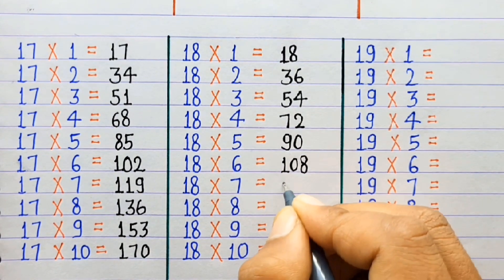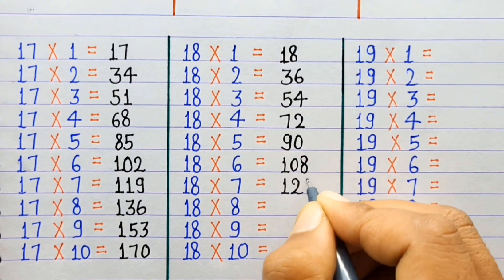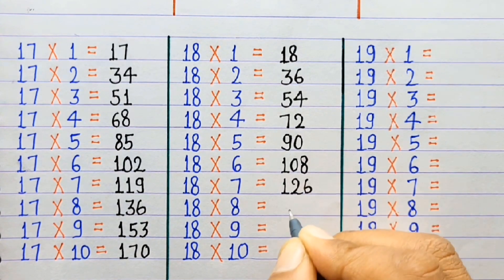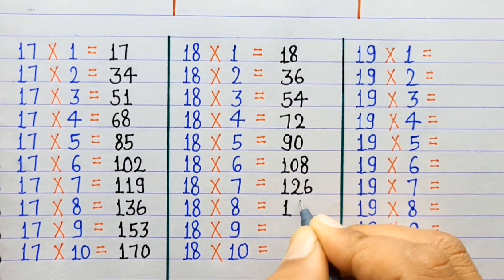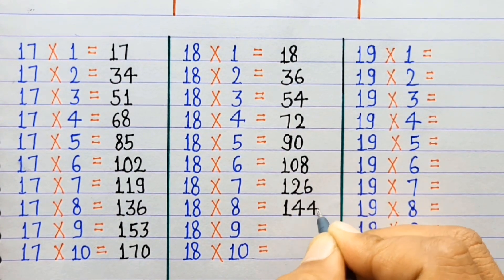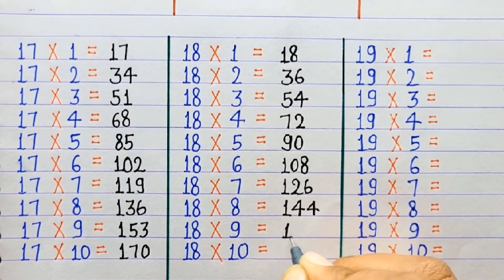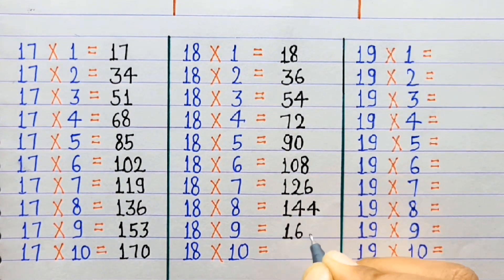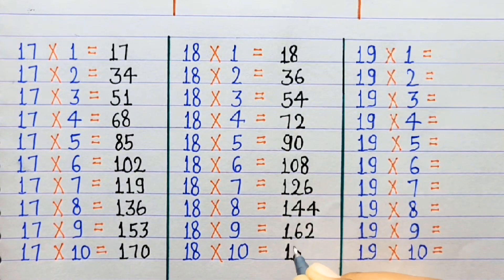18×7=126, 18×8=144, 18×9=162, 18×10=180.